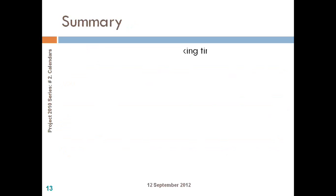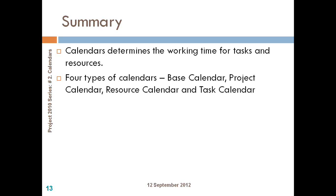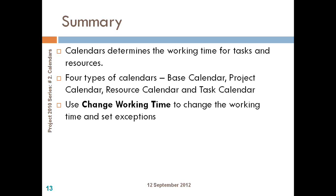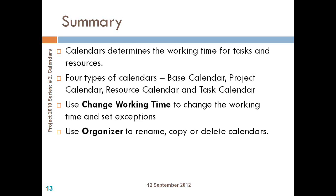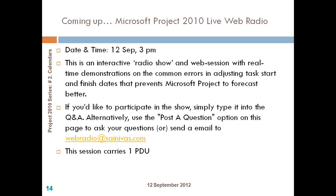To summarize: calendars are very important because they define working time at the project, resource, and task levels. There are four types: base, project, resource, and task calendar. When scheduling an activity, Project follows a bottom-up approach — it first looks at the task calendar; if not available, it moves to the resource calendar; if not available, it uses the project calendar as the default. To change working time or set exceptions, go to the Change Working Time option in your Project ribbon. Use the Organizer option on your backstage to copy, rename, or delete base calendars.